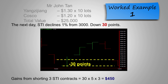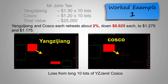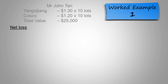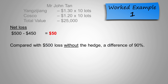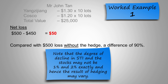Moving back to his other current positions, both Yang Zi Jiang and Costco each retreated about 2%, down 2.5 cents each to $1.275 and $1.175. Hence, the loss from the long position would be a total of $500. Now, let us calculate the net loss as a result of the hedge in the STI index. Due to the gain in the STI index, his net loss will only be $50. Comparing this to the $500 loss without the hedge, it is a difference of 90%. We also have to note that the degree of decline in STI and the stocks may not exactly be 1% and 2%, and hence the result of hedging may vary.